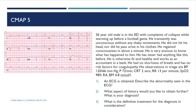An ECG is obtained. Describing the abnormalities: normal rhythm, left axis deviation, P waves normal, PR segment appears normal. The QRS shows an RSR' pattern. There is ST segment elevation with down-sloping or coved ST segments in V1, V2, V3, with biphasic T waves or T wave inversion.